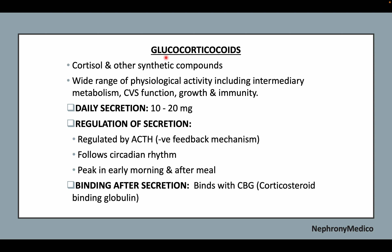Glucocorticoids include cortisone and other synthetic compounds. They have a wide range of physiological activity including intermediary metabolism, CVS function, growth, and immunity. The daily secretion in our body is about 10 to 20 milligrams. Regulation of secretion is by ACTH, circadian rhythm, with a peak in the early morning and after meals. After secretion, glucocorticoids bind with corticosteroid binding globulin (CBG).